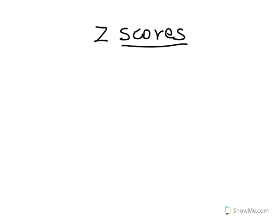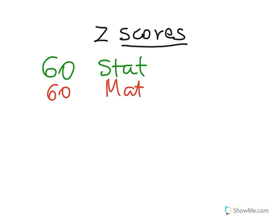Let's say that you go and meet your two friends. Both of them have taken a test in two different subjects and they both got the same score of 60. Friend number one got 60 in statistics and friend number two got 60 points in math. Although they have the same score, they are not really in the same emotional state. The one who got 60 in statistics is sort of happy while the one who got 60 in math is sad.